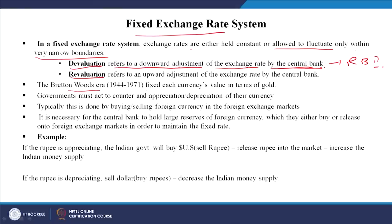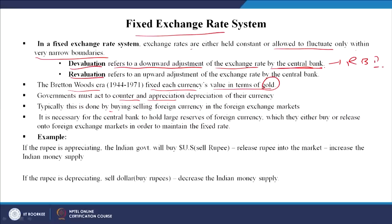The Bretton Woods era fixed each currency value in terms of gold - gold was the basis of measurement - and we used to compare our currencies in terms of gold. The government must act to counter any appreciation or depreciation of their currency, as we have discussed, because it affects the entire trading. Typically this is done by buying or selling the foreign currency in the foreign exchange markets - if you buy or sell the currency, that will change the foreign exchange impact or value.